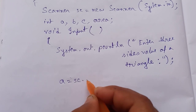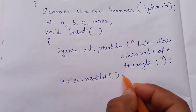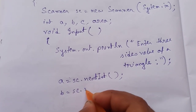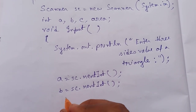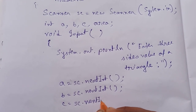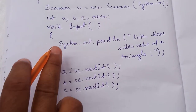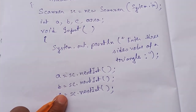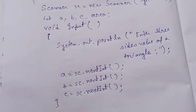a = sc.nextInt(); b = sc.nextInt(); c = sc.nextInt(); — each is a single word. So inputs are taken in a particular method, which is the input method. This closes the input portion.